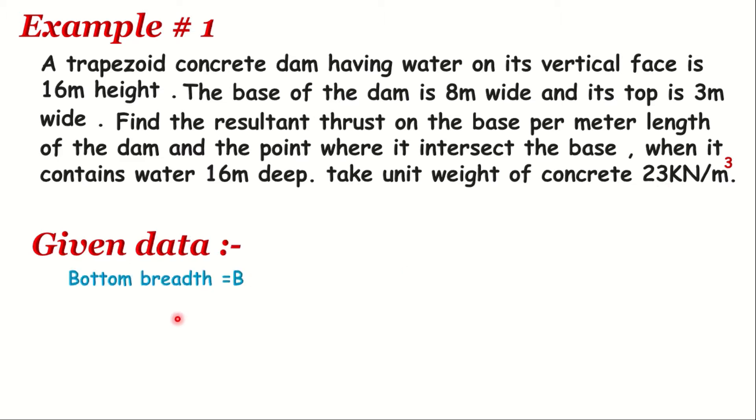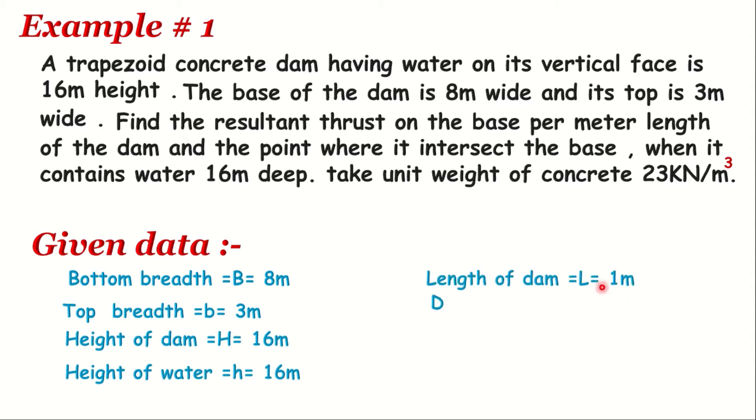Given data: Bottom breadth of dam B = 8m, top breadth b = 3m, height of dam H = 16m, height of water h = 16m, length L = 1m, density of water = 9.81 kN/m³, density of concrete = 23 kN/m³.